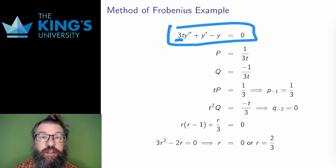If I divide through by 3t² to clear the coefficient of y double prime, then p and q will be undefined at t equals 0. So here are those coefficient functions p and q.